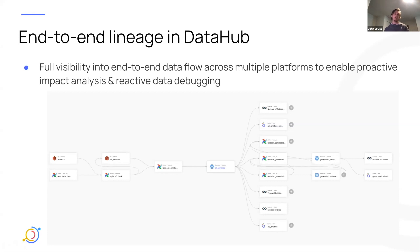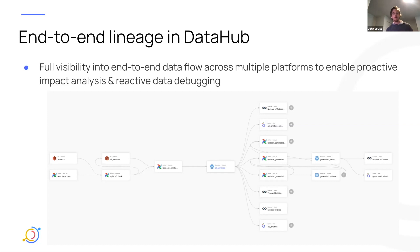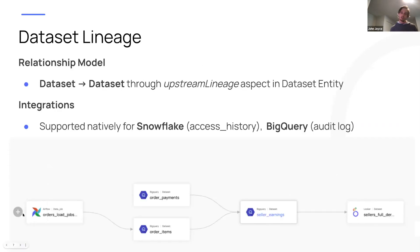And then there's the reactive side, which is debugging something once it's already gone wrong. If you notice that some dataset is showing weird results, you can understand what is upstream of that dataset and triage that more efficiently. We'll talk first about dataset-to-dataset lineage.